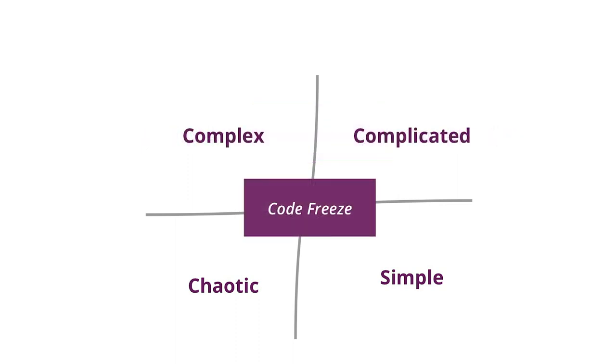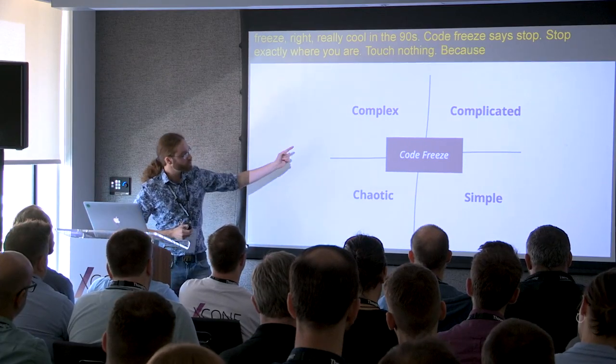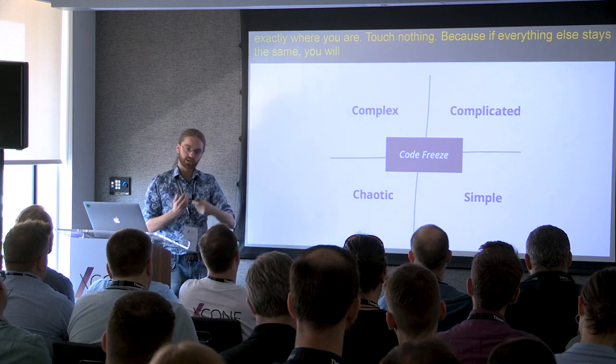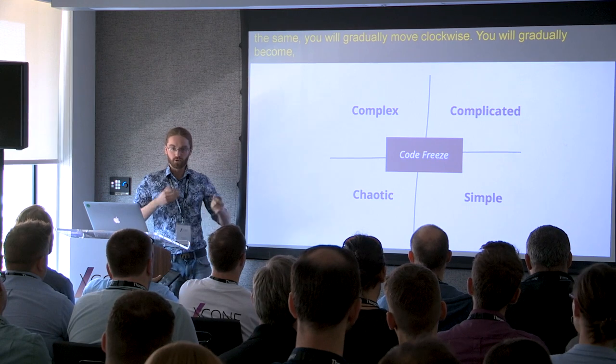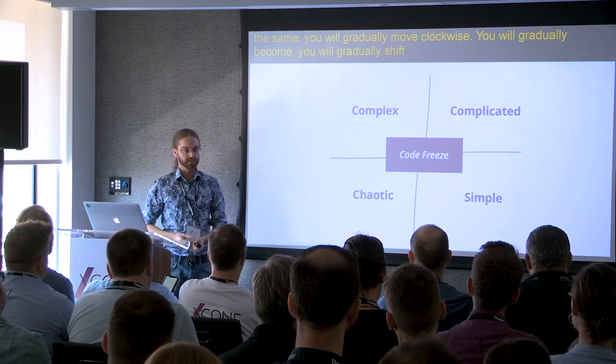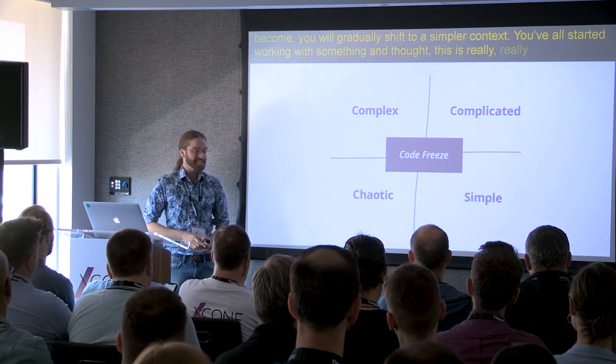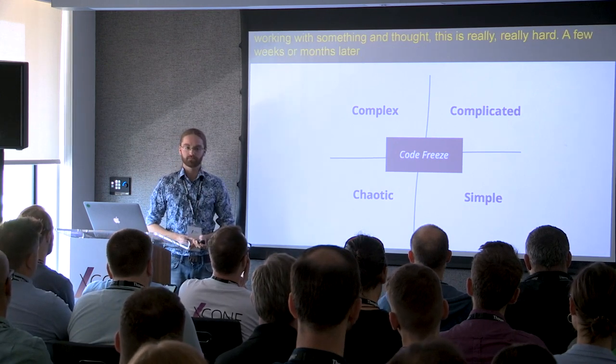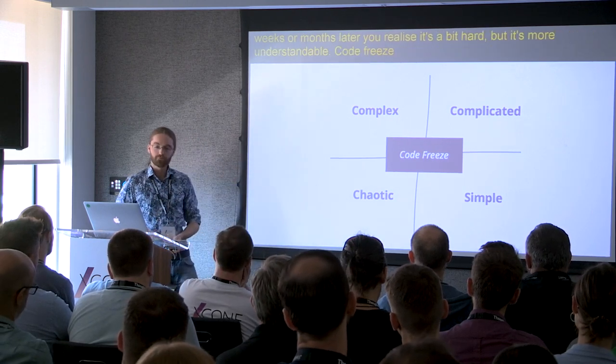Everyone remembers code freeze, right? They were from the '90s, really cool in the '90s. Code freeze just says: stop, stop exactly where you are, touch nothing. Because if everything else stays the same, you will gradually move clockwise, gradually shift to a simpler context. You've all started on a project and thought, 'This is really hard,' and a few weeks, a few months later, realized it's still hard but a bit more understandable. That's what code freeze is for—allowing you to pull things back.